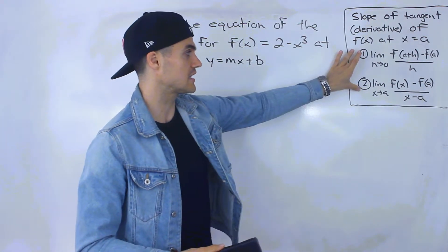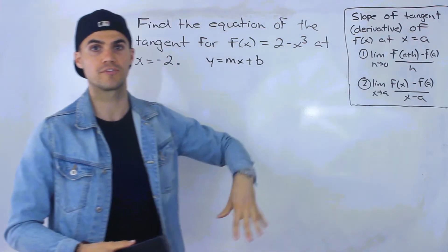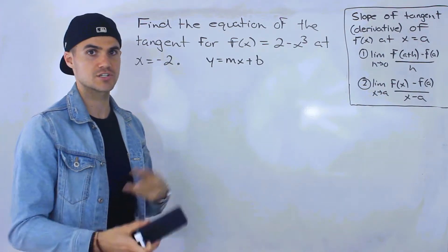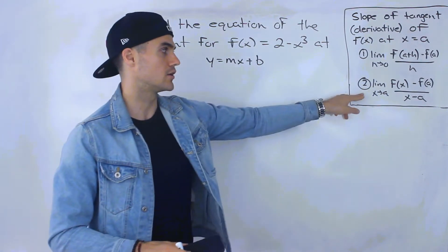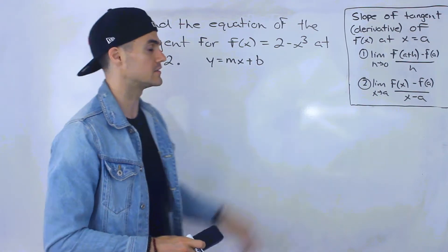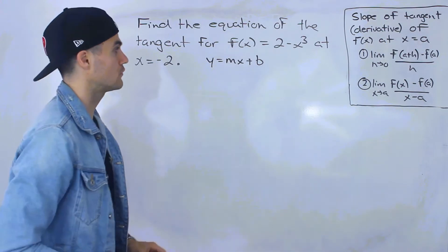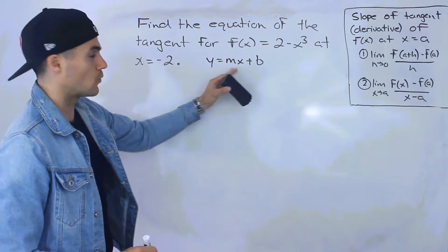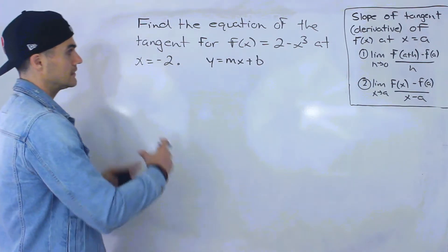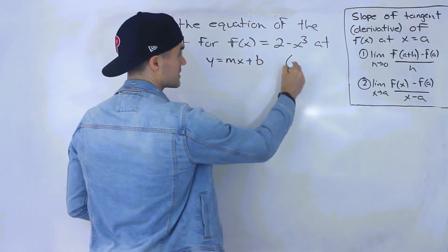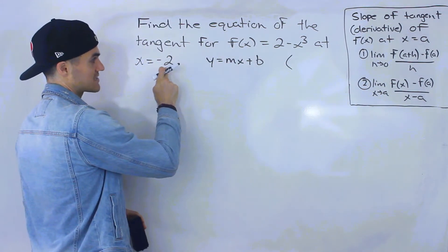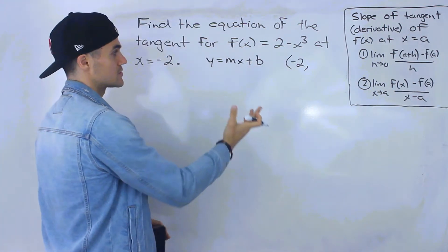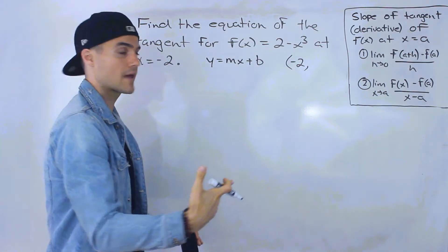When they're asking for the equation of the tangent, we know that our final answer is going to be in y equals mx plus b form. We're going to have to find the slope of the tangent for this function at x equals negative 2. I'm actually going to use both definitions in this video to get that same slope using both, just to give you some extra practice.